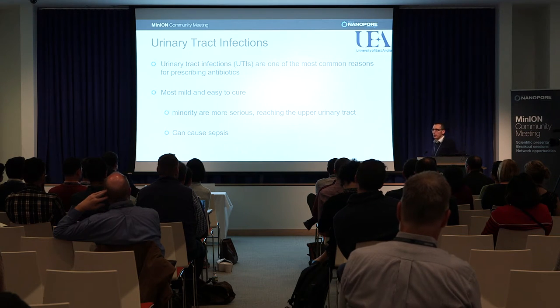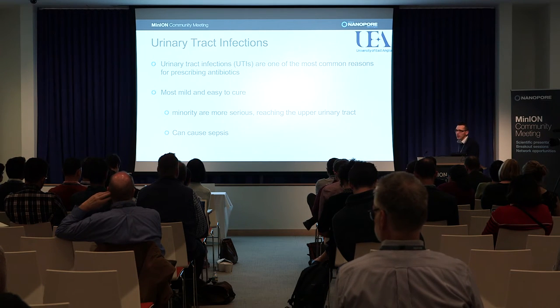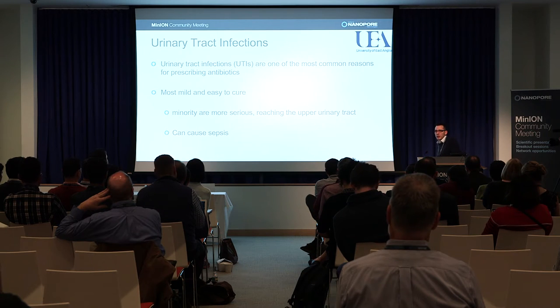Moving on to urinary tract infections — this is the application I'm going to talk about today, though I also do a lot of work on respiratory tract infections and sepsis. UTIs are one of the most common infections and one of the most common reasons for prescribing antibiotics. They're mostly mild and easy to cure, but some UTIs can become quite serious — they move up the urinary tract and can turn into sepsis or urosepsis. There were about 30,000 cases of E. coli sepsis in England in 2014, and the majority had a urinary origin.